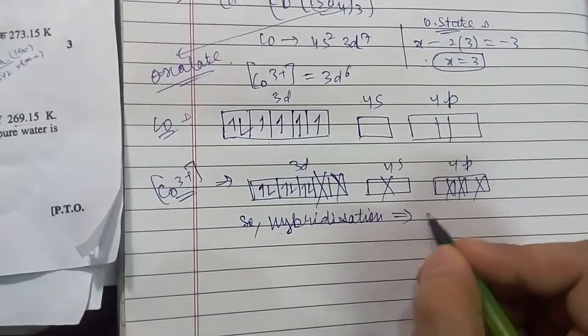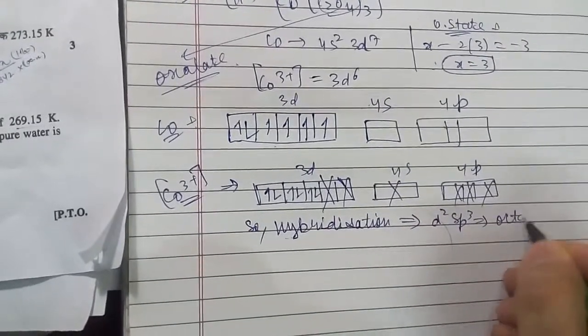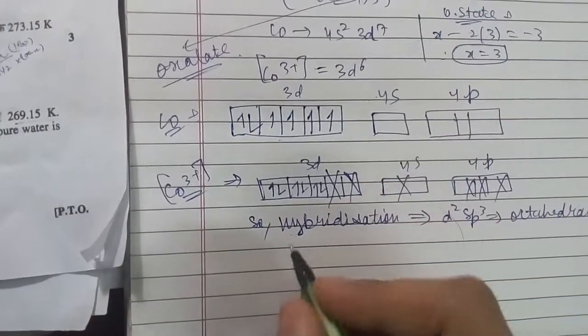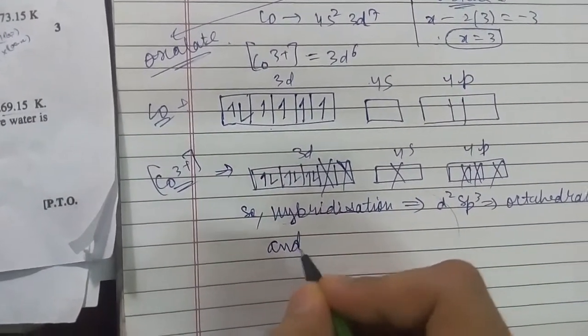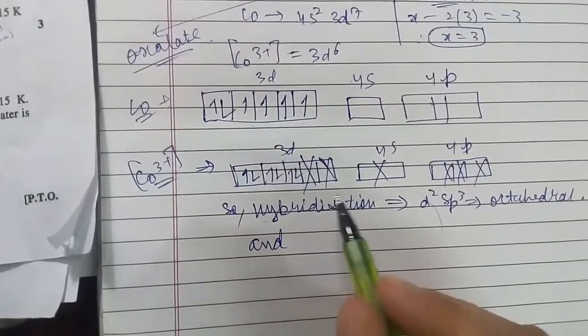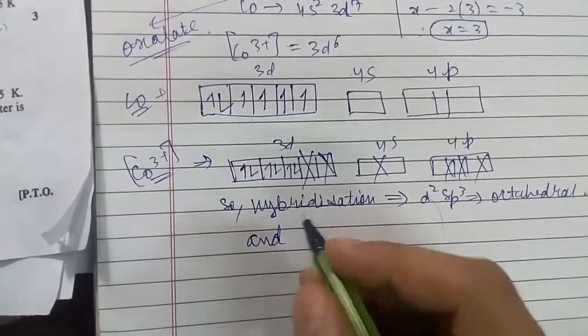d2sp3, which is octahedral. It is octahedral. And this is diamagnetic because no electron is left unpaired; every electron is paired, so this is diamagnetic.